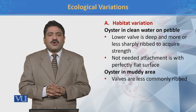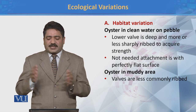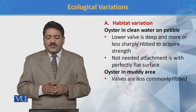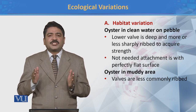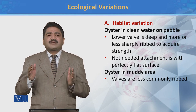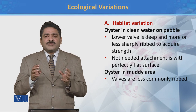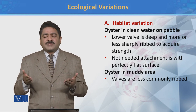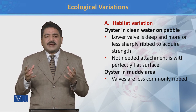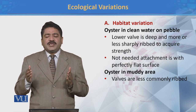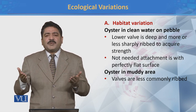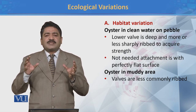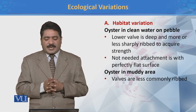Isi tarike se yahi jo oyster hain, agar yeh clean water ke andar aur pebbles par maujood hain to inka jo lower valve hai wo deep hota hai aur more or less sharply ribbed hota hai to acquire strength. Yeh change isliye hai taake jahan par yeh maujood hain wahan par strength hasil kar sakein. Lekin agar kisi aisi jagah par maujood hain jahan par surface smooth hai to wahan par iska jo character hai wo vary karta hai.